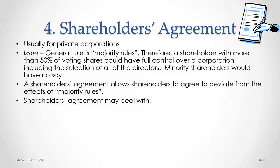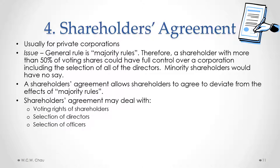Specifically, a shareholders' agreement may deal with a number of different things including the voting rights of shareholders and how directors are selected. For example, if we have a 60 percent shareholder and a 40 percent shareholder, without a shareholders' agreement the 60 percent shareholder would have the right — due to the majority rules rule — to select all of the directors. But with a shareholders' agreement, we can have a more fair allocation of the selection of directors between the majority and minority shareholder. The agreement could also deal with the selection of officers, for example specifying that one of the shareholders be the CEO.